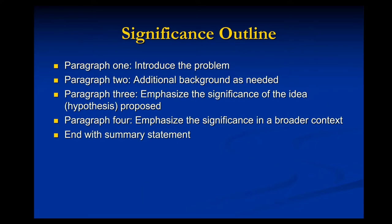A suggested outline: paragraph one introduces the problem; paragraph two gives additional background and a brief, focused literature review highlighting the most recent advances; paragraph three talks about the significance of your proposed project; paragraph four emphasizes significance in a broader context and how this will enhance new knowledge. End the significance section with a summary statement that crystallizes for the reviewer why your problem is so important and why you should get funding.